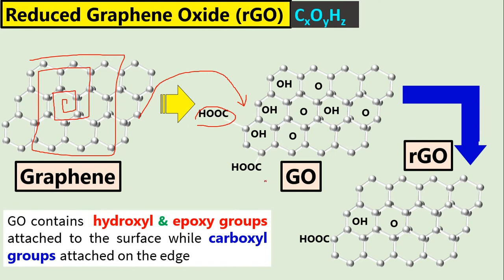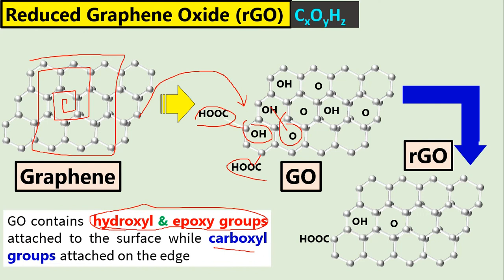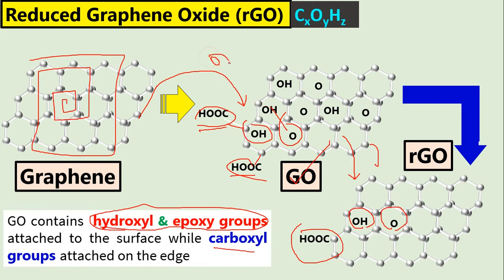These are the functional groups — the carboxyl group located at the edges, and the hydroxyl and epoxy groups located at the surface, called the basal surfaces. The carboxyl group is located at the edges. Now comparing this with reduced graphene oxide (rGO), you can see there are very few of these groups available in reduced graphene oxide — this is why it is called 'reduced.'